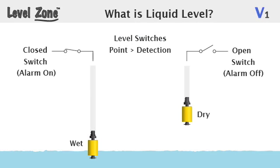Point sensors detect the presence or absence of liquid at their point of installation and provide a switch output that indicates their wet or dry status. These sensors are called level switches and are typically used for basic alarm and control functions.